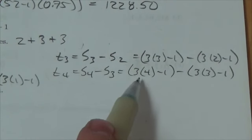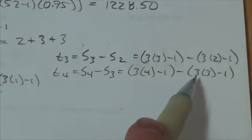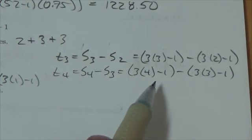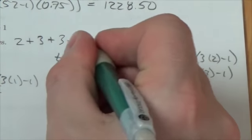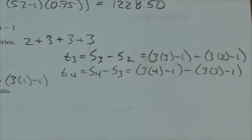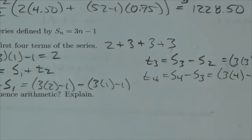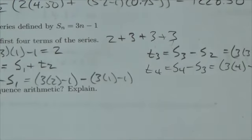Three times four is 12 minus one, that's 11. Three times three is nine minus one is eight. And so 11 minus eight once again is three. And so those are the first four terms of the series here, the two plus three plus three plus three.